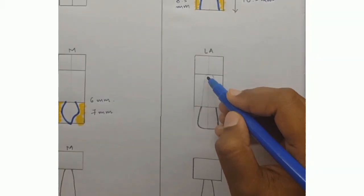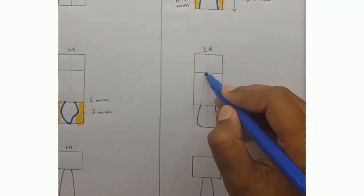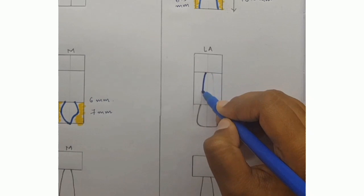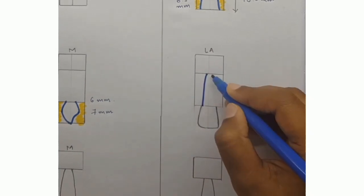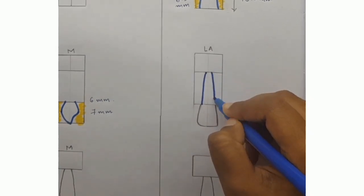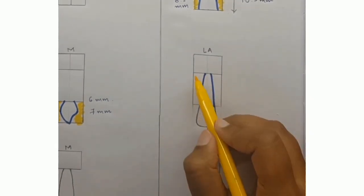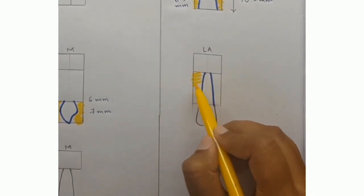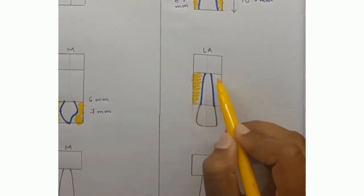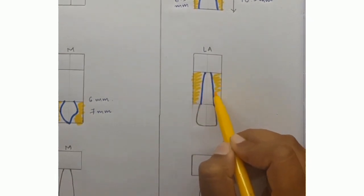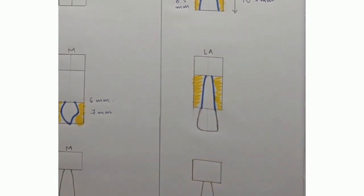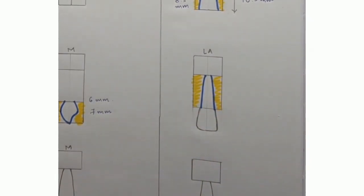Once the crown is done, mark the outline of the root on the labial aspect and remove the excess wax from the mesial and the distal aspect.